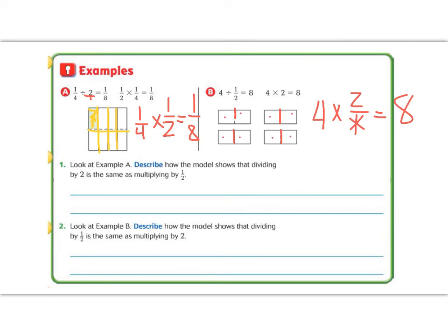Let's answer the questions below. It says, look at example A. Describe how the model is showing dividing by two is the same as multiplying by one-half. Well, we know that opposites are called the inverse operation. And if I divide by two, that would be the same as finding half of something. So inverse operations make it the same.